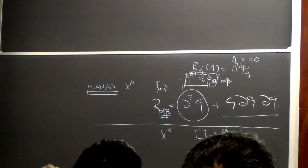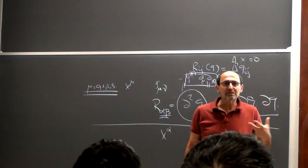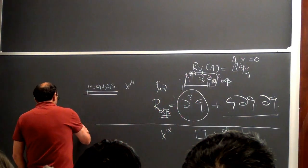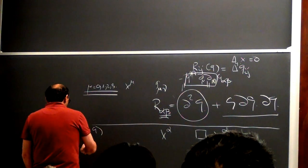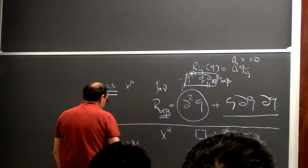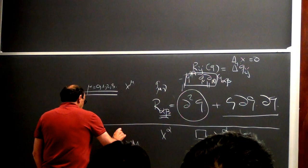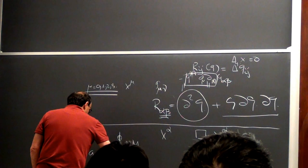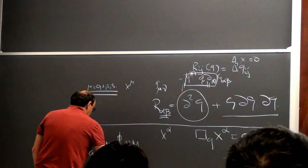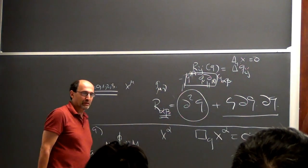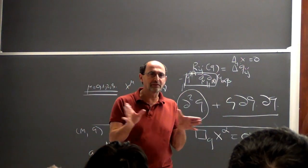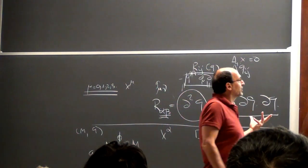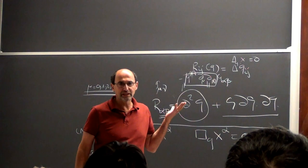This means solutions must be interpreted in a moduli space. If you have a metric G and a diffeomorphism phi from M to itself, then you have to identify the metric G with the pullback phi-star G. This is an expression of covariance — we are only interested in quantities which are invariant under diffeomorphisms.